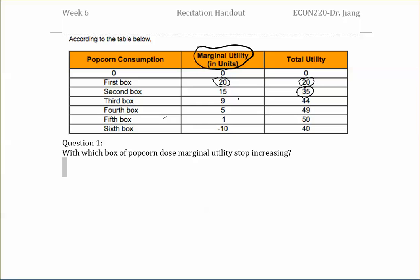The question only asks when marginal utility stops increasing. Starting from the second box, the marginal utility keeps decreasing from 15 to negative 10. So the answer for this question is the second box.